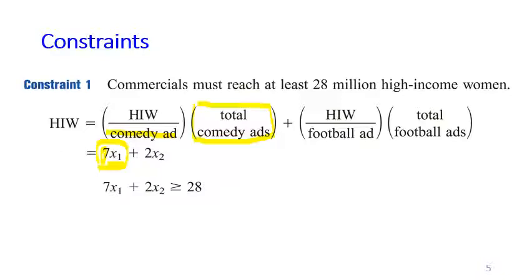Same reasoning here for each football ad, we get the attention of 2 million high-income women. But remember that we want to put the number of total football ads as many as X2. So in total, we get 7X1 plus 2X2, so it must be greater than or equal to 28.